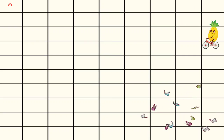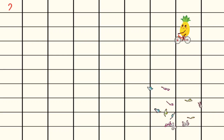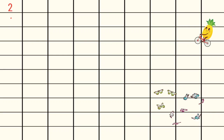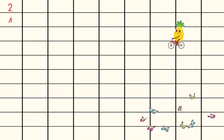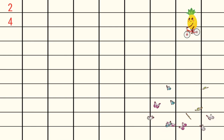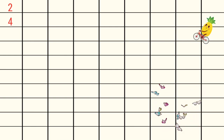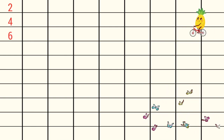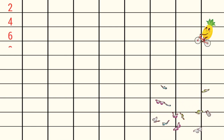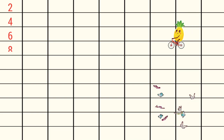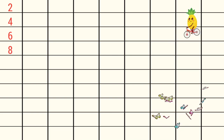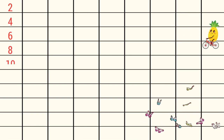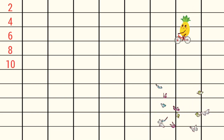2 1s are 2, 2 2s are 4, 2 3s are 6, 2 4s are 8, 2 5s are 10.